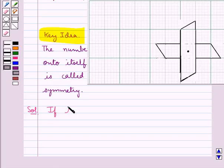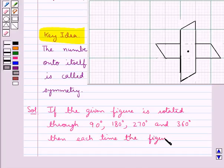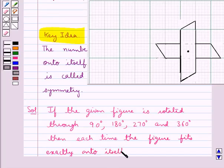Now if this given figure is rotated through 90 degrees, 180 degrees, 270 degrees, and 360 degrees, then each time the figure fits exactly onto itself.